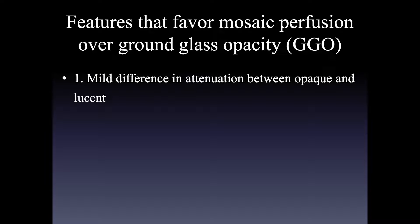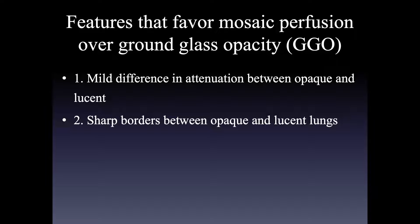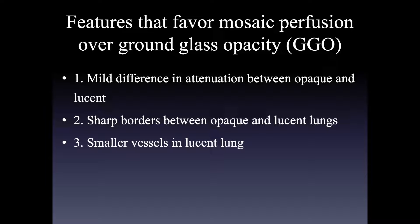In many cases there is a relatively mild difference in attenuation between the opaque and lucent areas, and the lucent areas are very sharply demarcated — you can draw with a pencil the lines between the two. Sometimes you have smaller vessels in the abnormally lucent lung and bigger vessels in the more normal opaque lung. That finding is helpful when present, but in many cases of airways disease the vessel size is the same, so it's helpful when present but not helpful when absent.